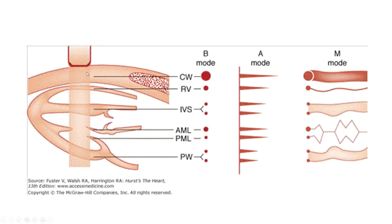This is a schematic showing what the M-mode echocardiogram is showing you. Here is the transducer on the chest wall, and these are the structures being insonated in order. B-mode echocardiography stands for brightness — this is the brightness of the returning echoes. A is the amplitude of the signal, and M stands for motion. These structures line up with this motion.